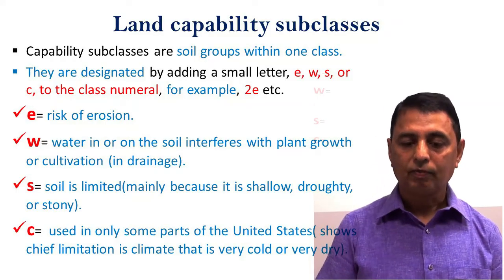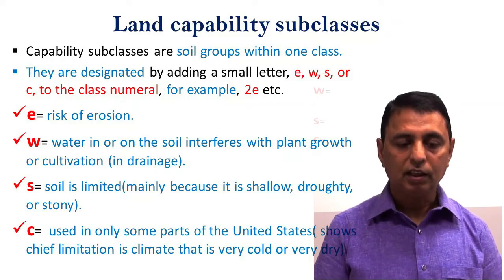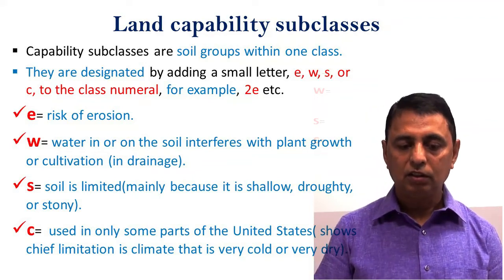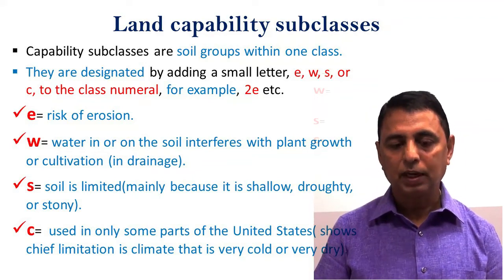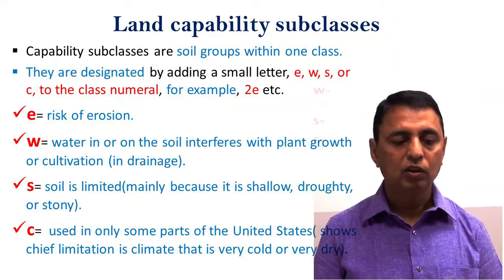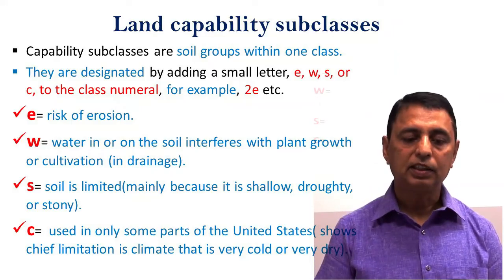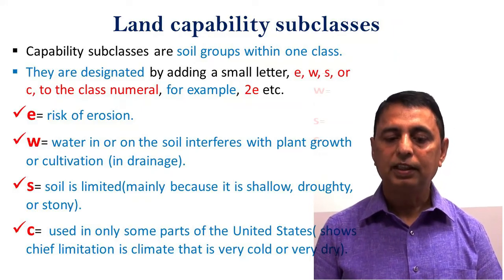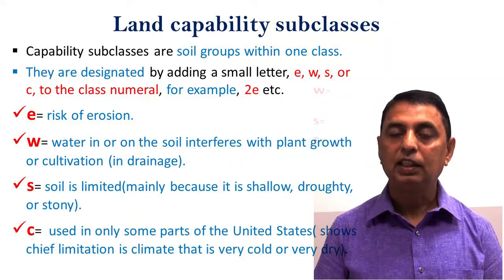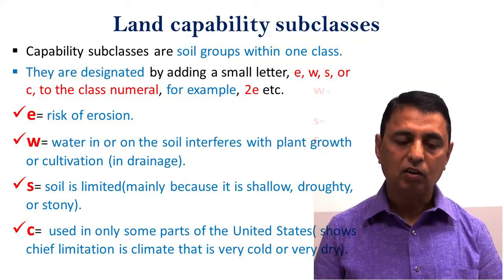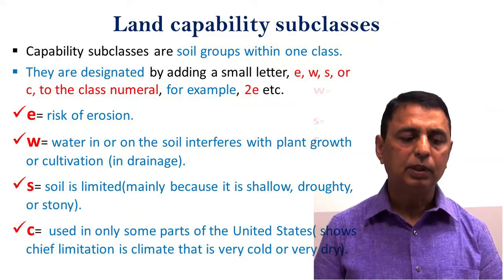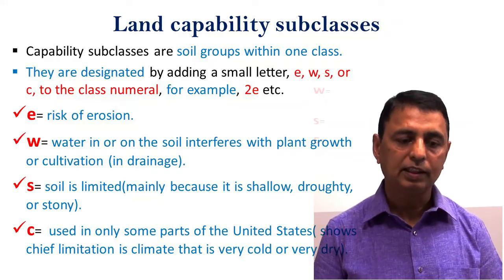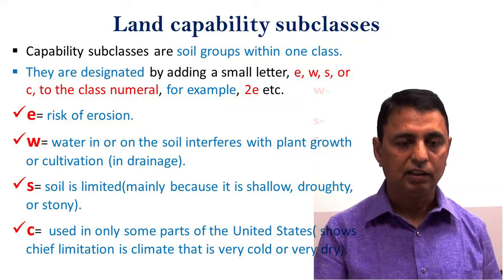S means the soil is limited mainly because it is shallow, droughty, or stony. C indicates a climate limitation — very cold or very dry conditions, or any climatic condition that limits land use, is denoted by C.